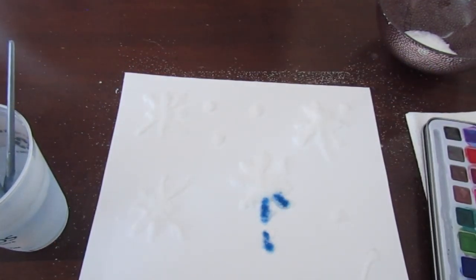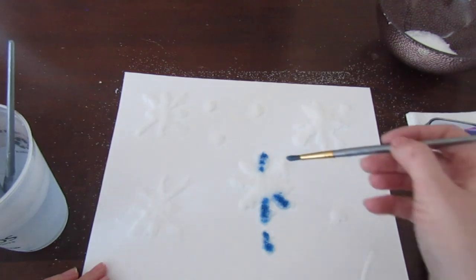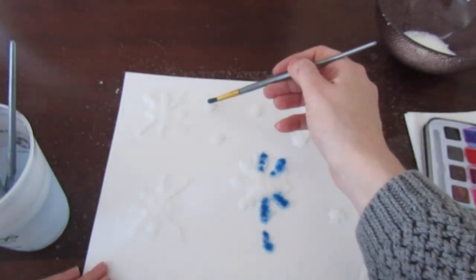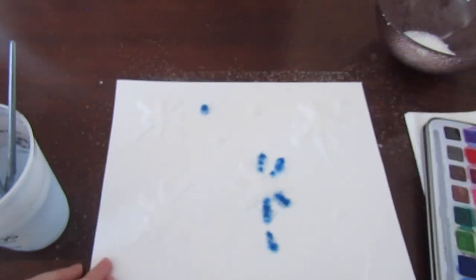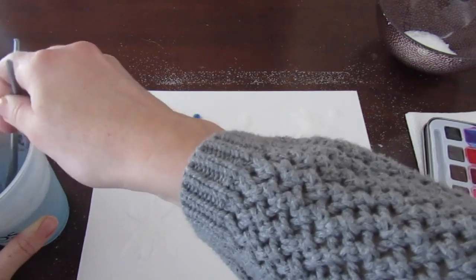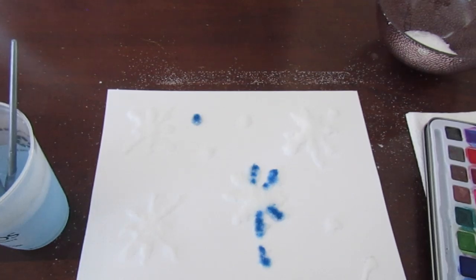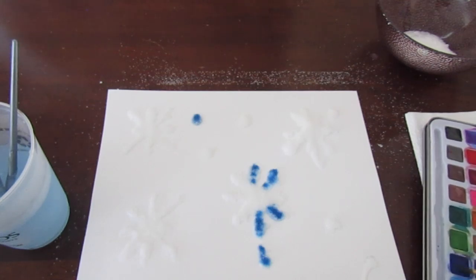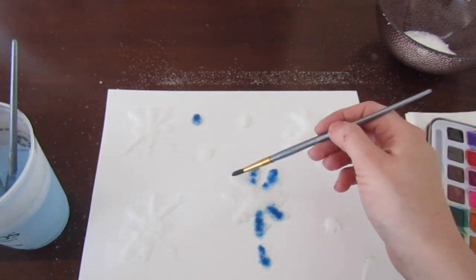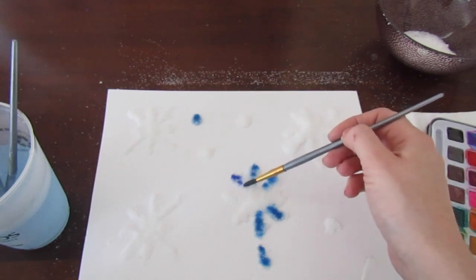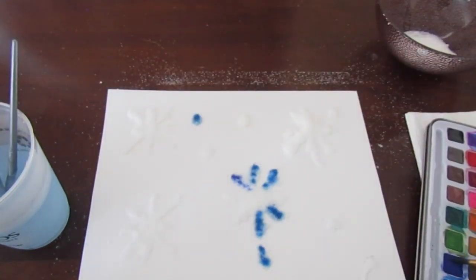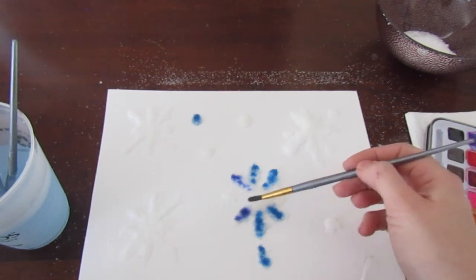This is also a really good project to explore color mixing. So once you see that the color is no longer running across the snowflake, that's a good time to know that you want to add more paint to your brush. So you just continue this process. I'm going to do one of the circles up here. Just a quick, gentle dab. You don't want to press too hard because that will move your salt and expose the glue that's underneath that's not covered with salt.